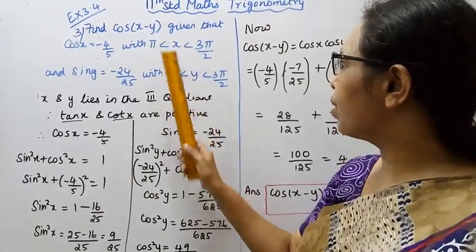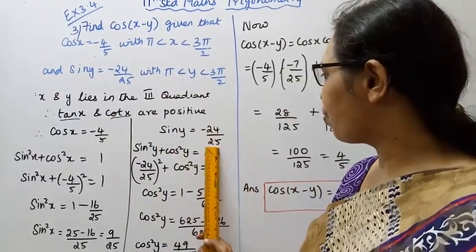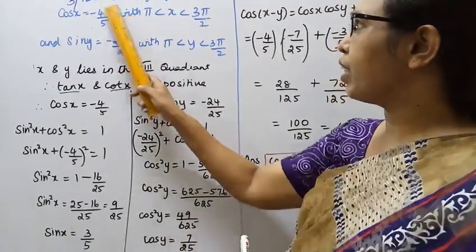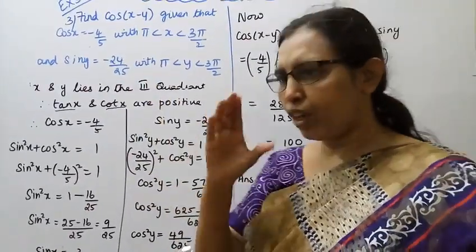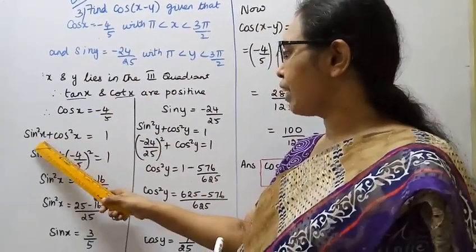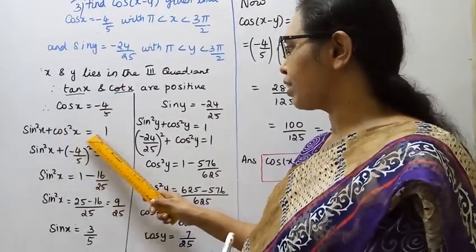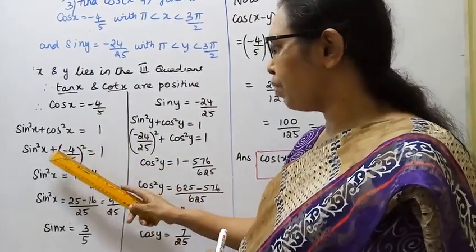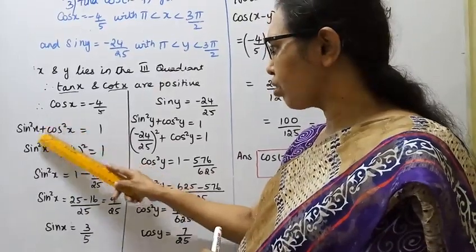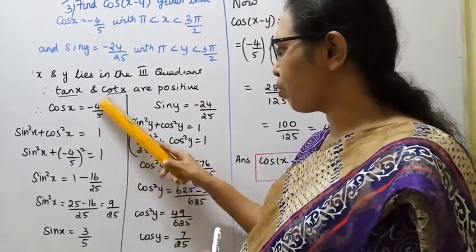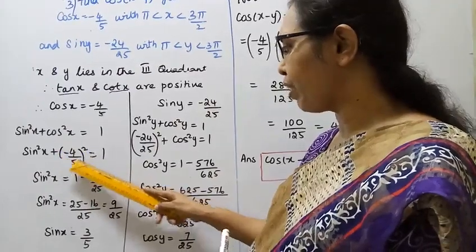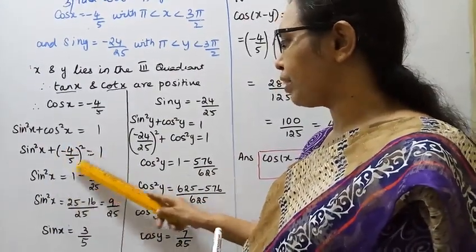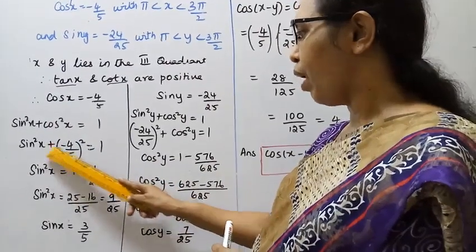To find sin x and cos y, we'll use the formula sin squared x plus cos squared x equals 1. Sin squared x plus cos squared x, where cos x value is minus 4 by 5. So minus 4 by 5 whole squared equals 1. Sin squared x equal to 1 minus 16 by 25.